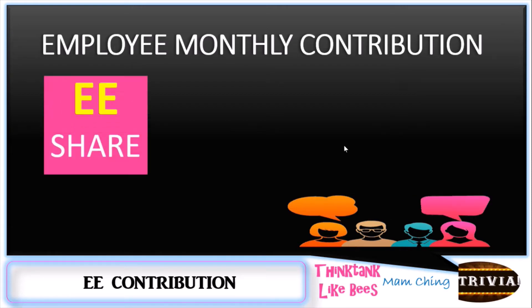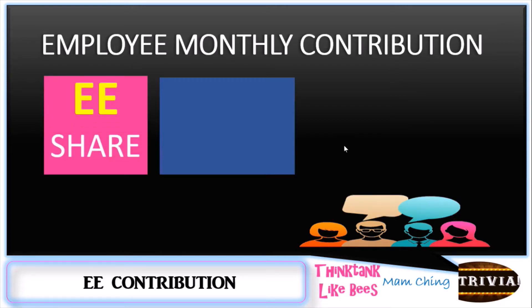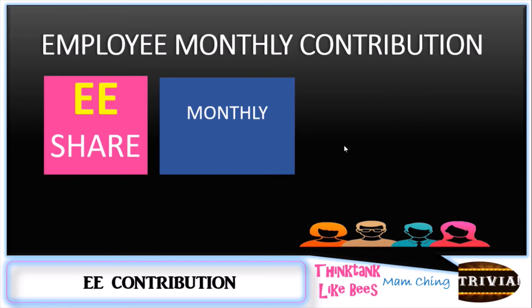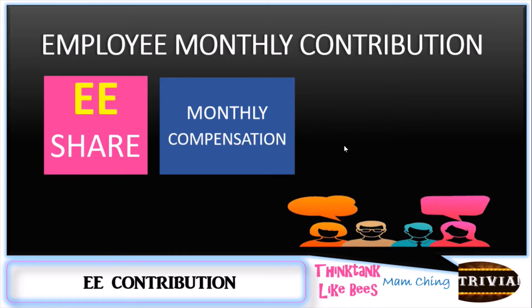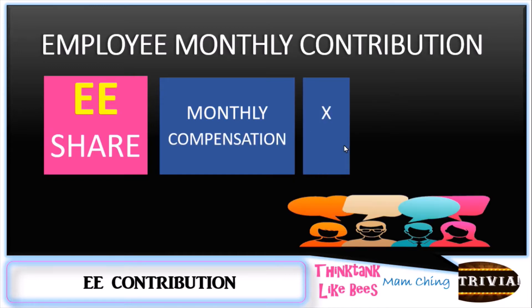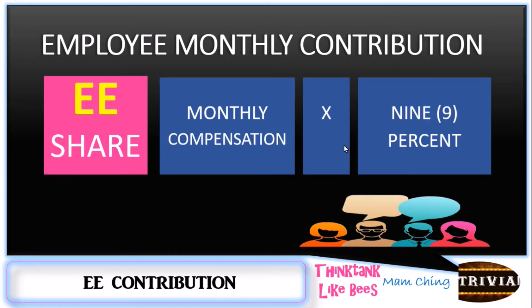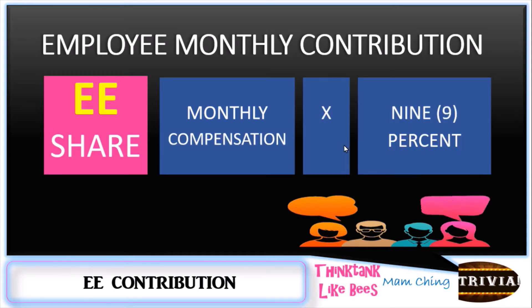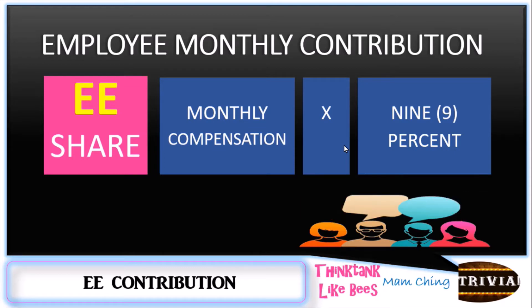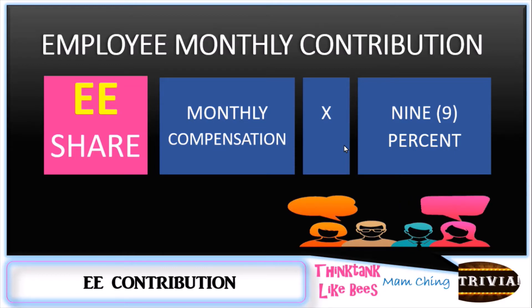So how will we do it? First, we need to get the monthly compensation multiplied by nine percent. So nine percent is part of the GSIS contribution of the employee.